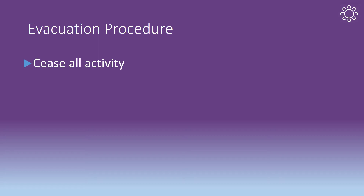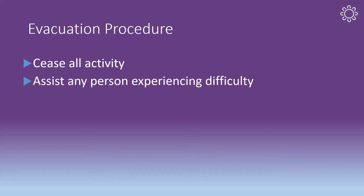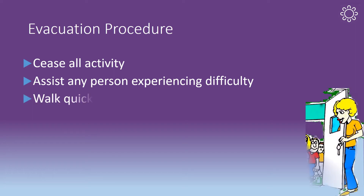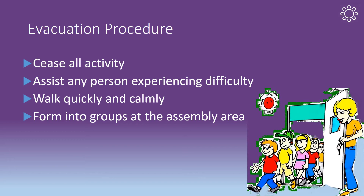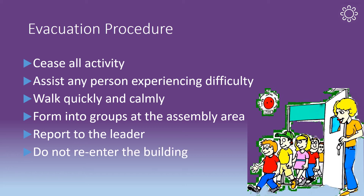On hearing an evacuation instruction, immediately cease all activity and, only if it is safe to do so, switch off any appliances, equipment and machinery. Assist any person experiencing difficulty with the evacuation. Take a quick look to your left and right to see who is standing or sitting nearby. Walk quickly and calmly to the assembly area via the nearest exit. At the assembly area, form into groups to assist the leader to ensure everyone has been safely evacuated. Report to the leader if you cannot locate the person that was to your left or right before you evacuated. Do not re-enter the building. Remain at the assembly area until otherwise instructed.